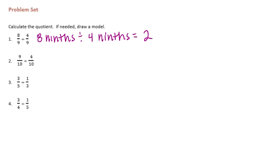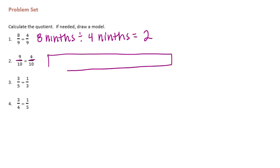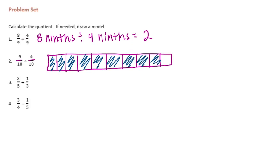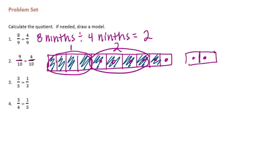The next one also has the same denominator. I could write it out using the units, but I can already see that nine divided by four — I can't do that equally. So I'm going to draw tenths and shade in nine of them, then split them into groups of four-tenths. There's one group of four, and a second group. I would need another two-tenths to complete a third group, so there's one remaining group with one shaded out of four. This is equal to two and one-fourth.